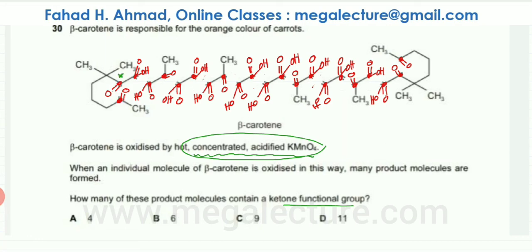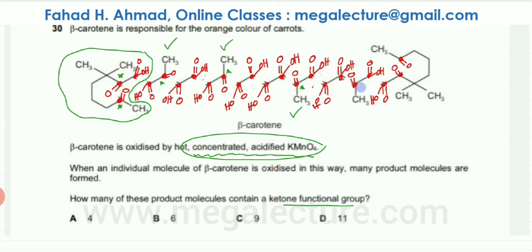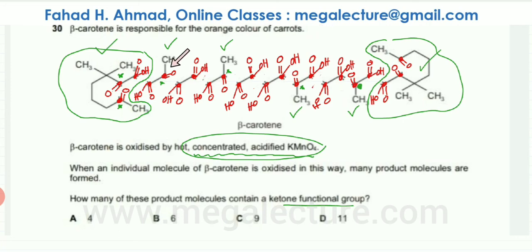Here I see a ketone functional group — and here's another one, but they are the same molecule, so that counts as one. Again a ketone functional group — that's another molecule. This one has carboxylic acids on both sides but a ketone in the middle — another one. Carboxylic acids on both sides again. Another ketone here — that's one more. Carboxylic acid on both sides but a ketone group here — another one. And then there are two ketone functional groups on this last molecule, so that counts as one. Counting all the stars: one, two, three, four, five, six. The correct answer is six.